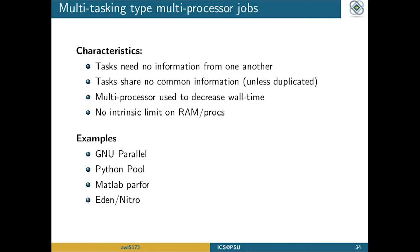The first type is the multitasking type job. Tasks can run independently from one another and don't need any information from each other; if they do have common information, it gets duplicated — ideally they wouldn't share information at all. You can use more and more processors to decrease total wall time, even though the total computational time is constant. Because tasks are independent, you can run on as many different nodes as you want — there's no intrinsic limit on RAM or processors. GNU Parallel is an excellent tool for this that I suggest people learn; we've had a lot of good experience getting serial jobs running with GNU Parallel on our system.